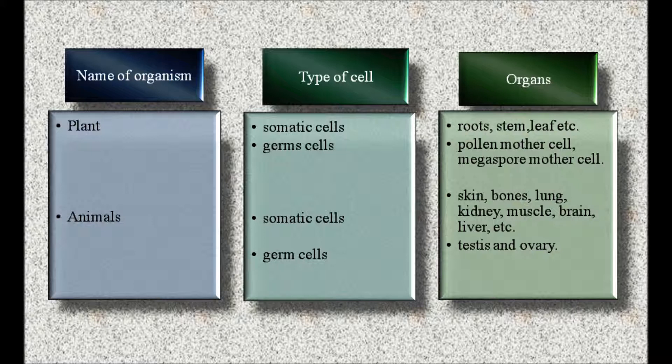In plants, somatic cells produce roots, stem, leaf, etc. In plants, germ cells produce pollen mother cells, megaspore mother cells, etc.